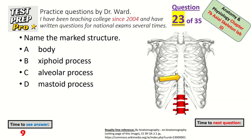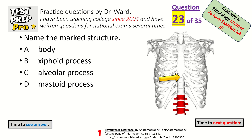Name the marked structure — it's the lowest part of the sternum. Xiphoid process.